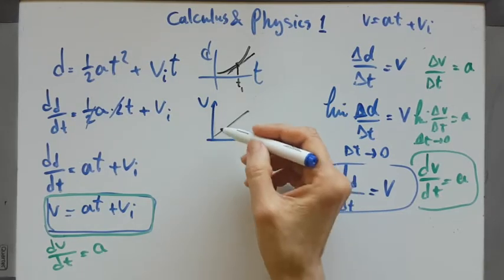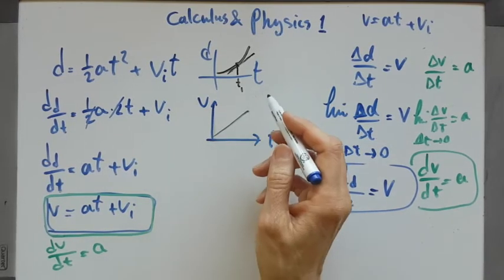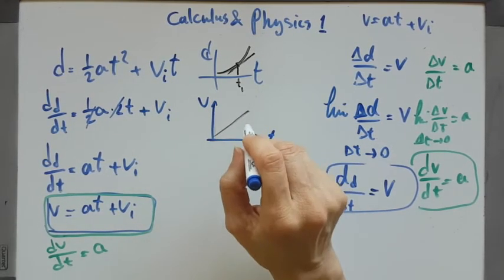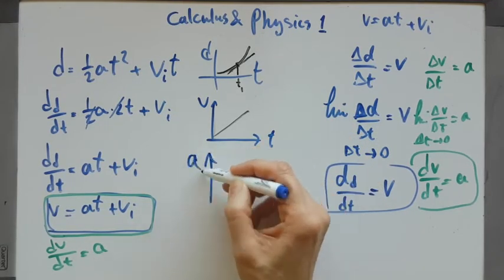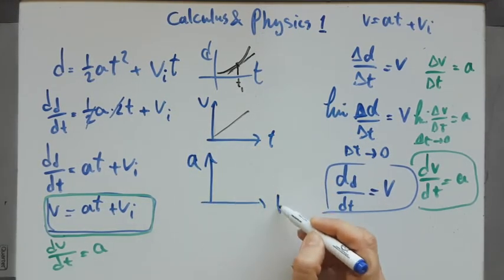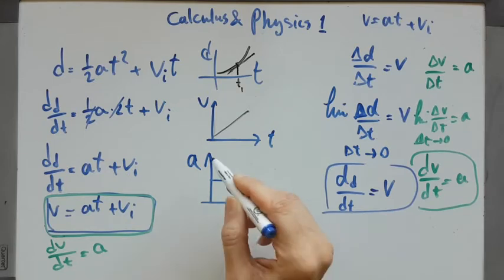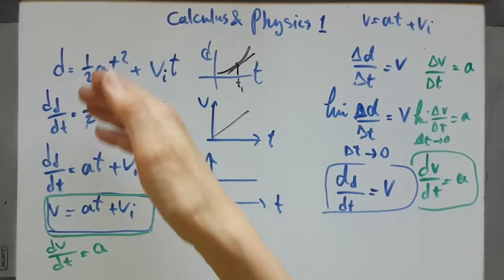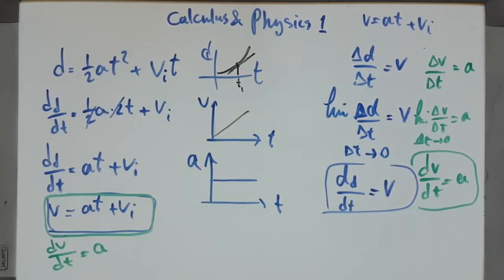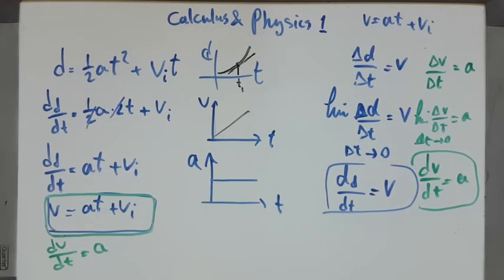What is the derivative of a line? The derivative of a line is the slope of that line. As you can see, in this case the slope is constant, which is the constant acceleration situation you are always dealing with when solving your problems. All these formulas consider a situation when the acceleration is constant.